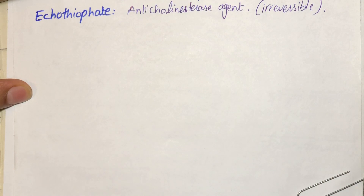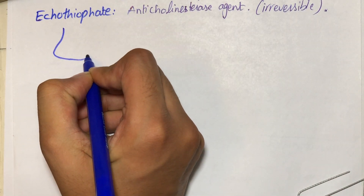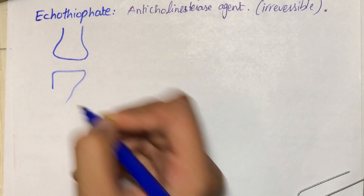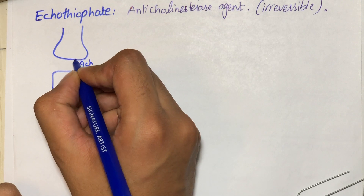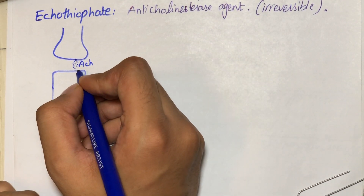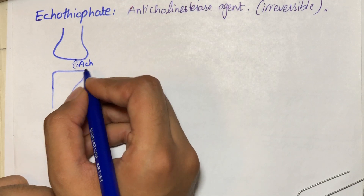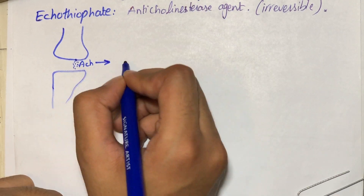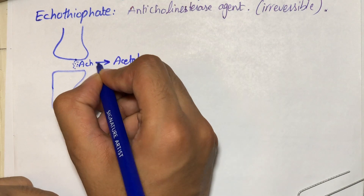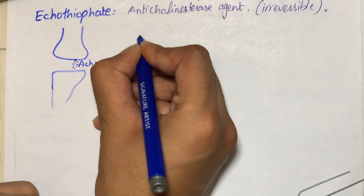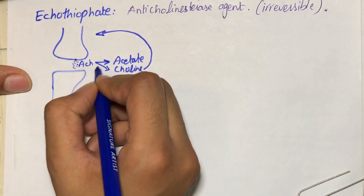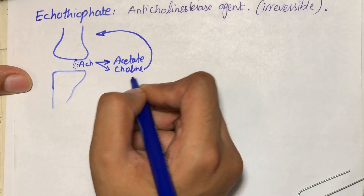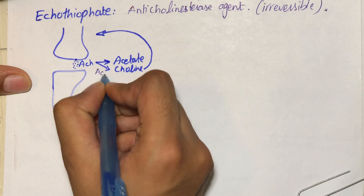It is an indirect-acting cholinergic agonist. Normally in our body, there is a pre-synaptic neuron and a post-synaptic neuron, and between them there is a synaptic cleft. When this neuron releases acetylcholine into the synaptic cleft, there is also a presence of cholinesterase enzyme which degrades acetylcholine into acetate and choline. Choline is then transferred back into the pre-synaptic neuron for the further formation of acetylcholine, by the action of an enzyme called acetylcholinesterase.